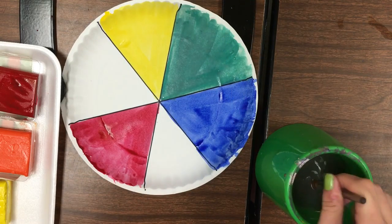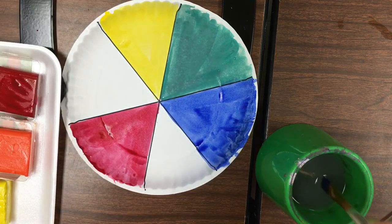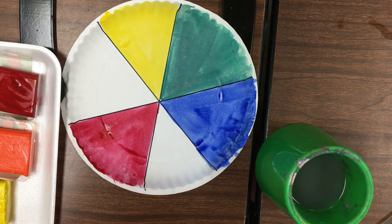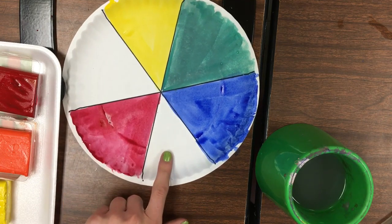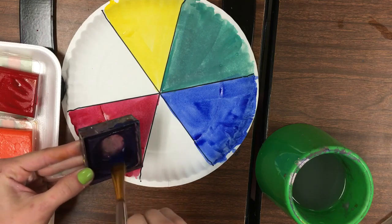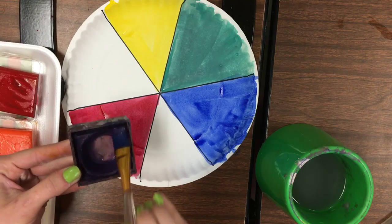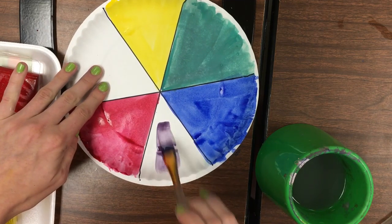Alright, clean off my brush again. Same process: wipe it clean, grab a little bit more water. I'm going to combine my two neighbors, which are blue and red this time. Blue and red gives us purple, so I'm going to take my purple, grab some purple paint, and put it on my color wheel.